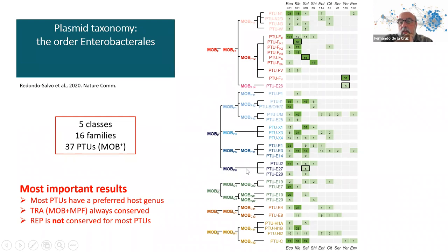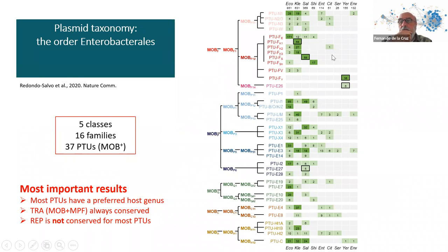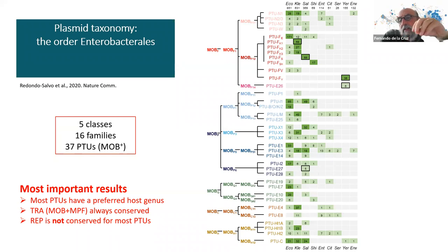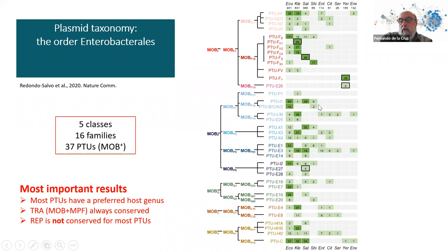When we look at the plasmids of the order Enterobacteriales, which contains E. coli, Salmonella, and everything else shown at the top of this column, we see the PTUs — Plasmid Taxonomic Units. Most of them appear in one or a few genera. I was surprised to find that most plasmid taxonomic units derive from one species or one genus of bacteria, although in some cases they can appear in other genera as well.